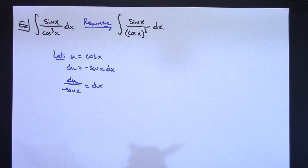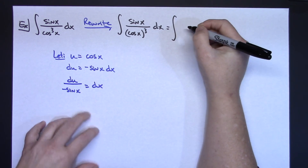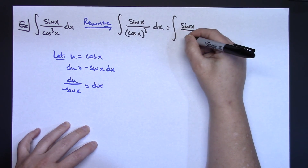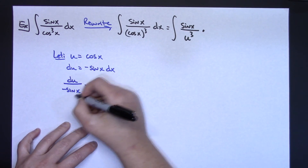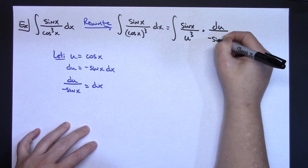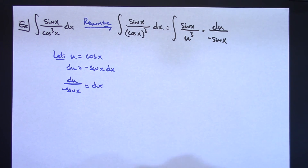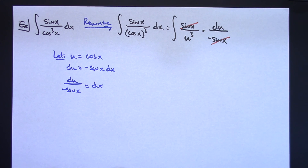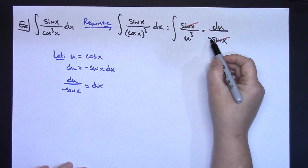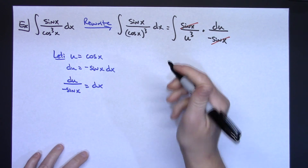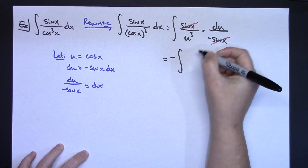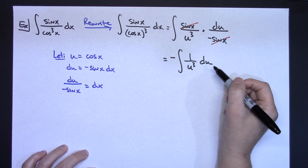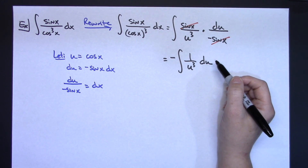Substituting into the integral: sin(x) on top stays, cos(x) on the bottom becomes u³, and dx becomes du/(−sin(x)). Now I can cross out: sin(x) on top and sin(x) on bottom cancel. I still have a −1 in the denominator, so I pull the negative outside the integral, leaving the integral of 1/u³ du. I've successfully gotten everything in terms of u, confirming the u-substitution is correct.